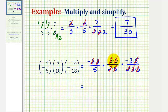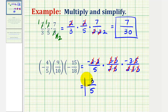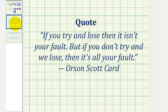Looking at the numerator, since the common factors all simplify to ones, we have negative one times one times negative three, which is positive three. For the denominator, we'd have five times one times one, or just five. So our product is three-fifths. I hope you found these two examples helpful. Thank you.